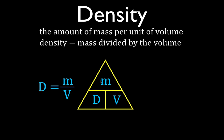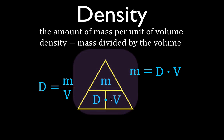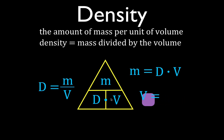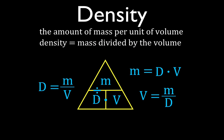To solve for mass, cover up the M in the triangle — you're left with D and V next to each other, which means you multiply them: mass equals density times volume. To solve for volume, cover up the V — you're left with M over D, so volume equals mass divided by density. And to check: to solve for density, cover up D and you get M over V, which is the original equation. Those are the three rearranged equations.